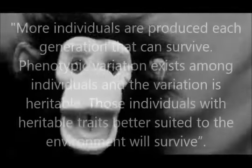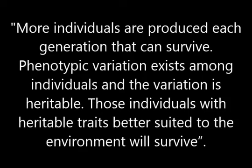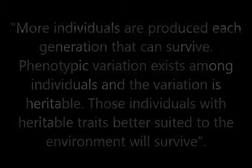Before looking at evolutionary psychology, we need to talk about evolution. Is evolution a natural or a social science? It actually depends, because while we can observe and verify some aspects of evolution, we can't prove other aspects of evolutionary theory. Darwin summarized his theory of evolution by natural selection as a process whereby more individuals are produced each generation than can survive, phenotypic variation exists within individuals and variation is heritable, and those individuals with heritable traits better suited to the environment will survive. We can observe, test, and verify that natural selection occurs all around us in biology.